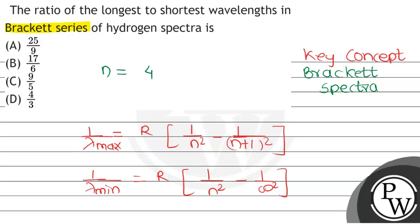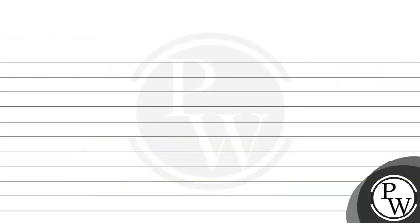So therefore, for calculating the lambda max, if you put this in the above formula, therefore 1 by lambda max equals R, that is Rydberg constant, into 1 by 4 square minus 1 by 5 square.